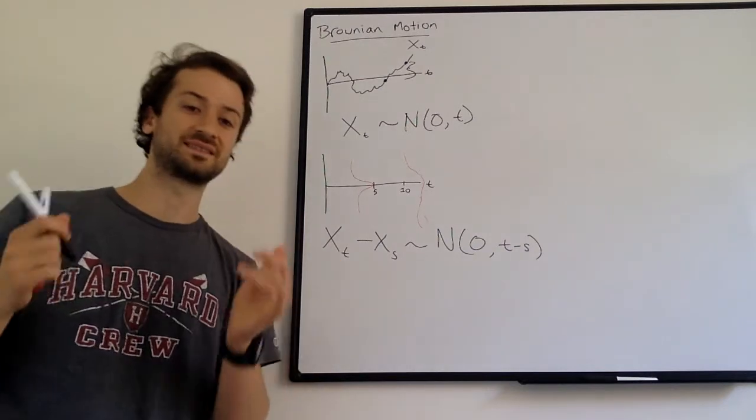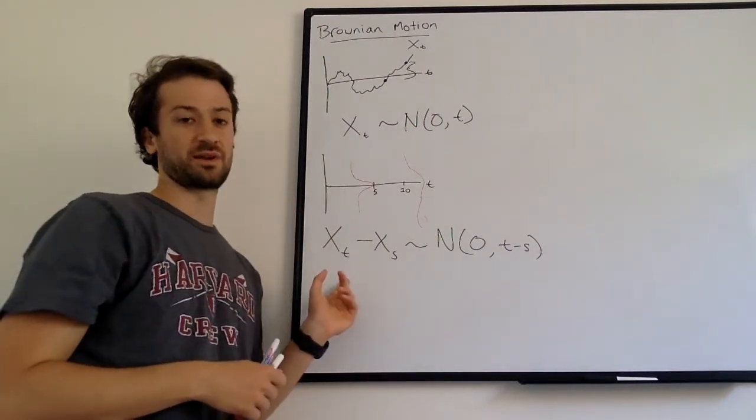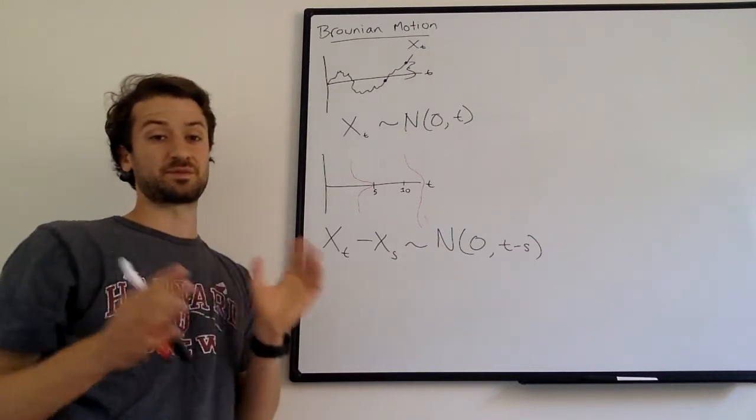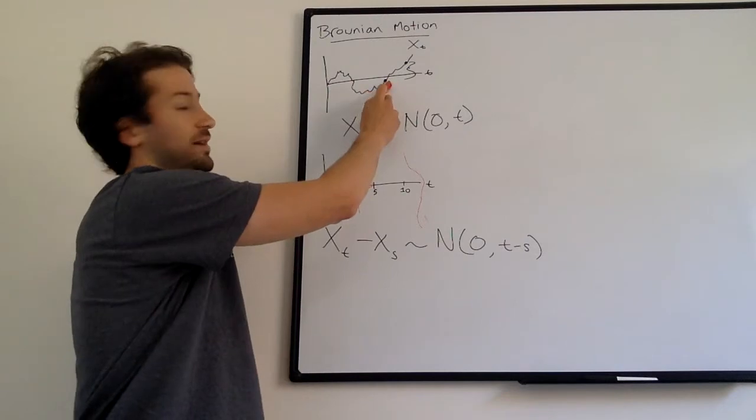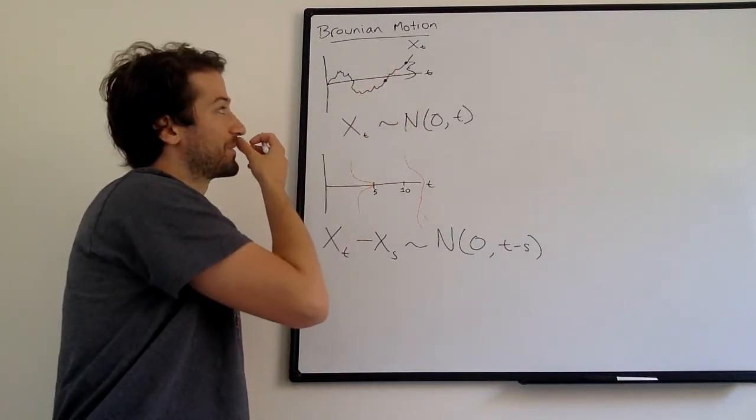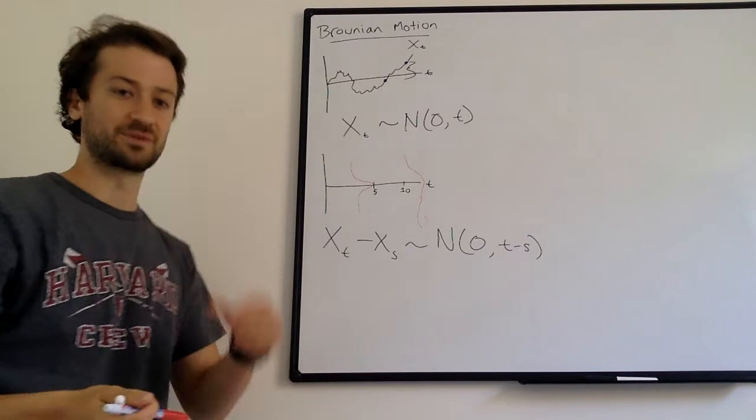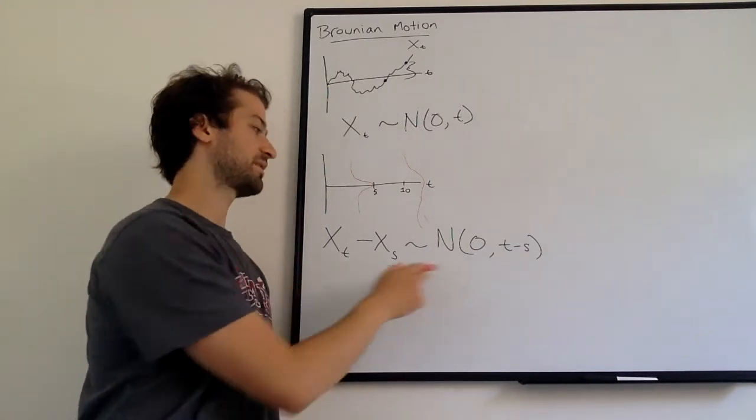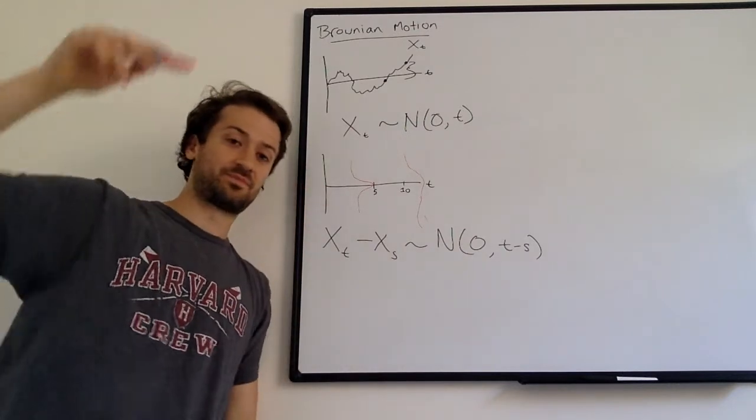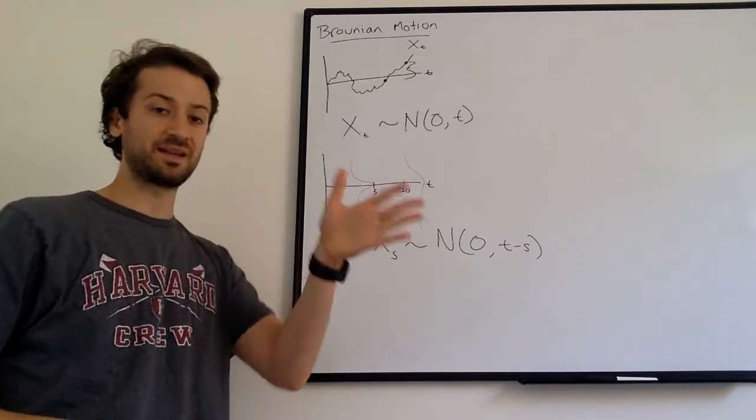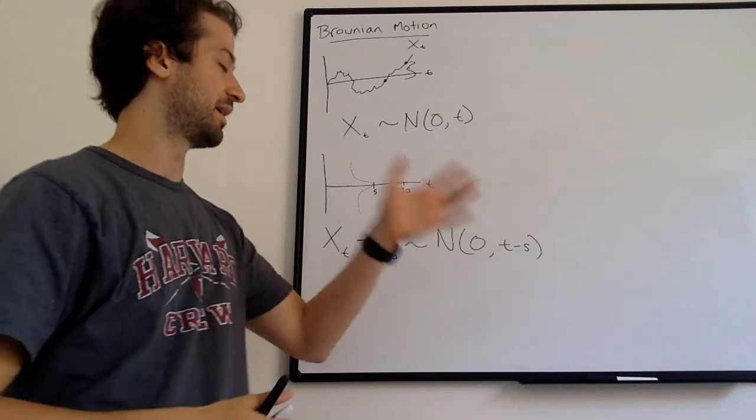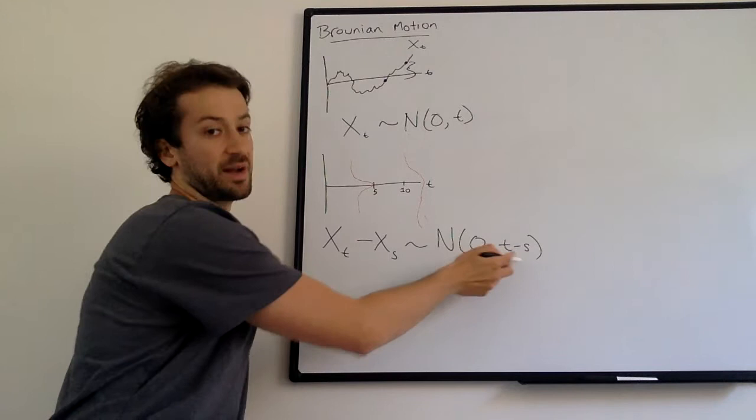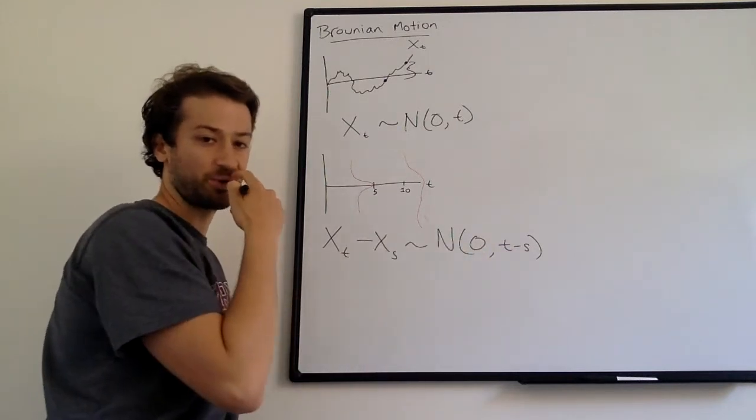And even if s isn't quite at zero, right, we don't care if x sub s or x sub t is at zero, we care about the difference between those. So even though here s starts in negative terrain, we just care about the difference between the increment, the change. So basically it will still be mean zero because we don't expect the mean of the new increment that we're adding will still be zero. The variance will be t minus s because we're going t minus s more time forward.